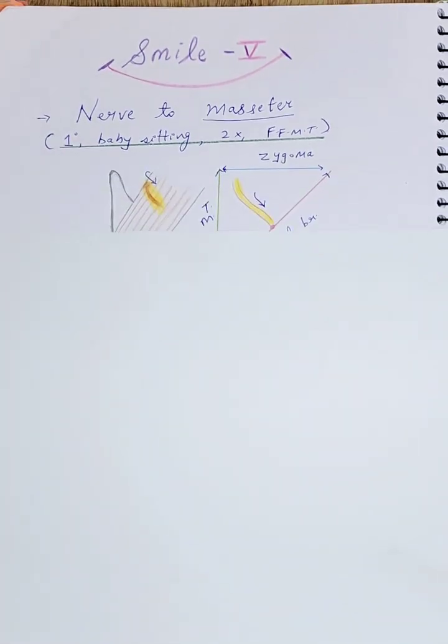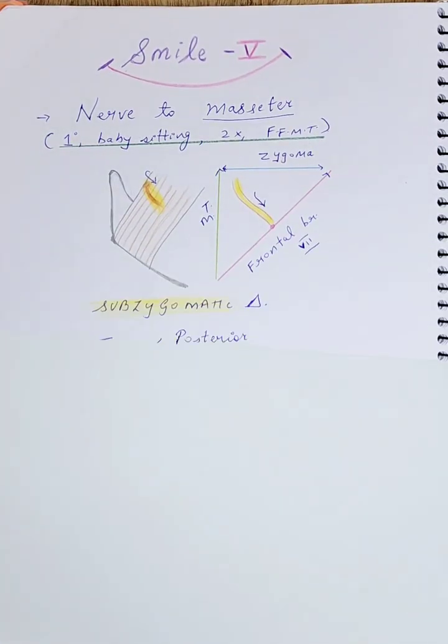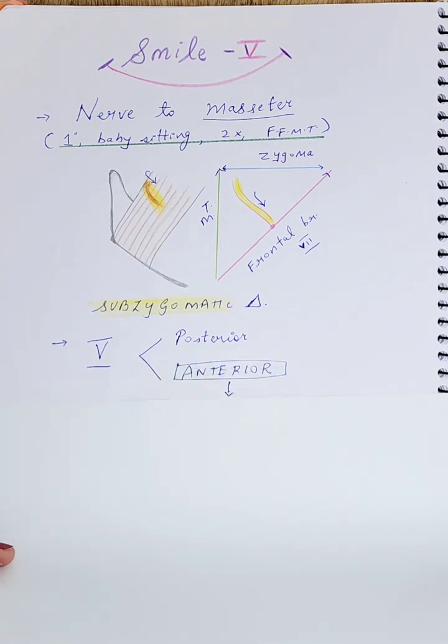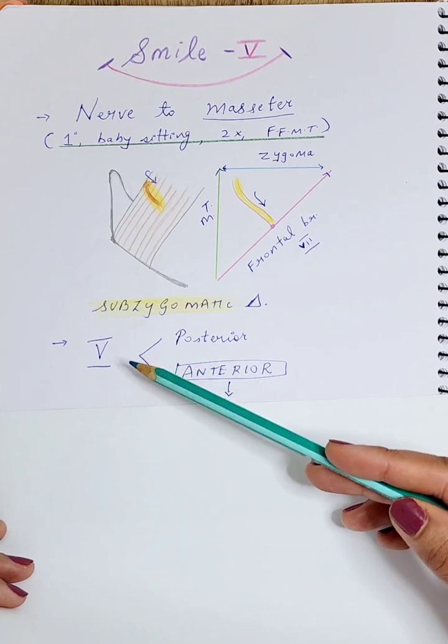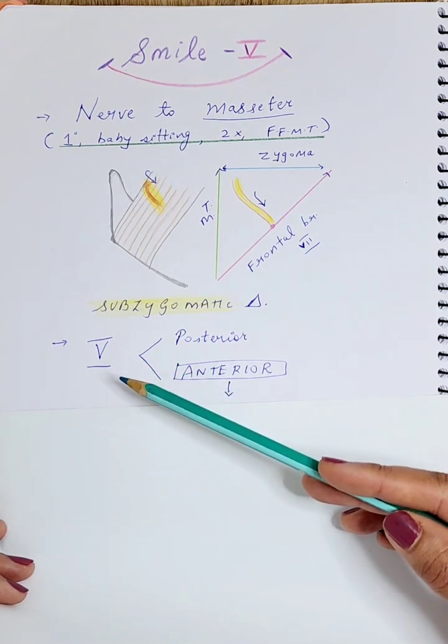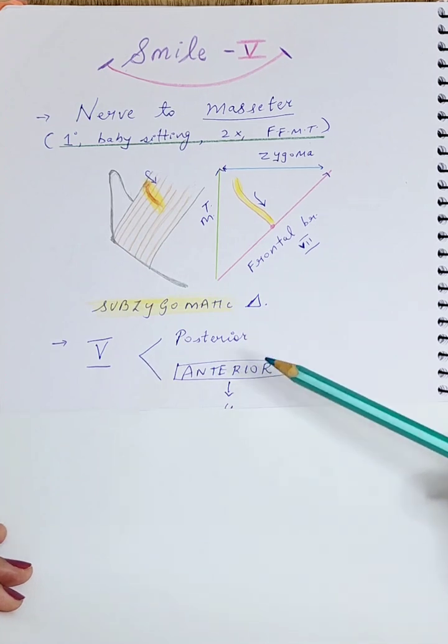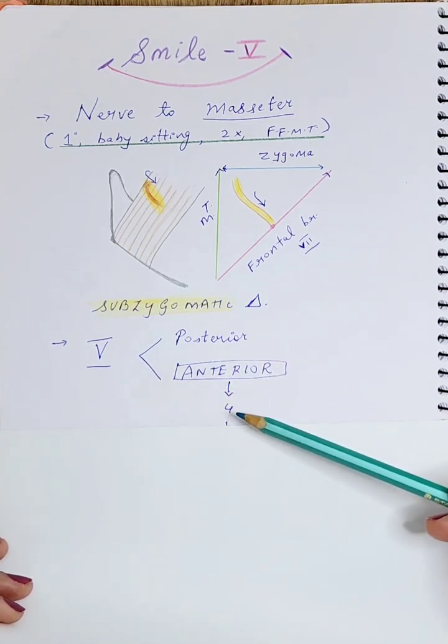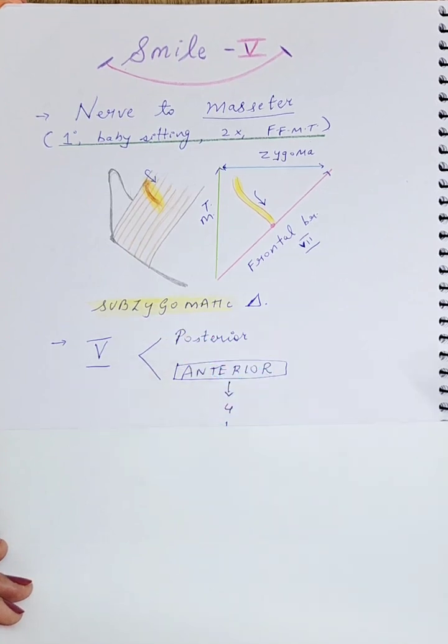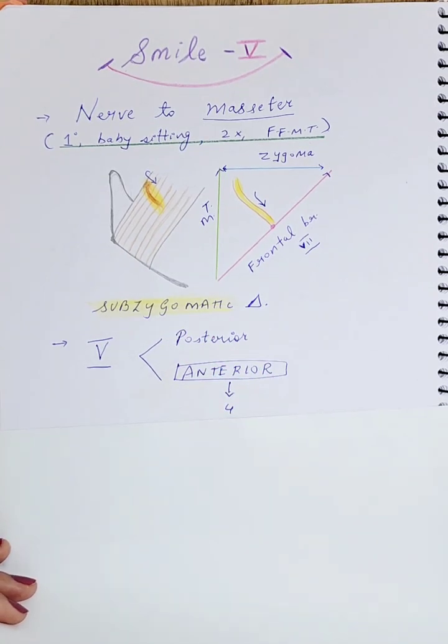It's a very important nerve which comes from the trigeminal nerve. The trigeminal nerve, the fifth nerve, is a very robust mixed nerve (sensory and motor) with two divisions: posterior and anterior. The anterior division has four branches, of which the biggest one is the nerve to the masseter muscle.